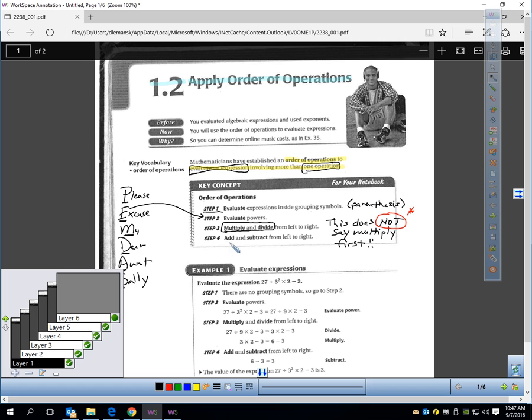What's last? Aunt Sally. A-S. Add, subtract. The Aunt Sally stands for adding and subtracting. Again, do you notice this step four in the book, it doesn't say add first and then subtract second. It says just do all your adding and subtracting from left to right. If you do the problem in this specific order, you'll get to the right answer unless you make a computation error.